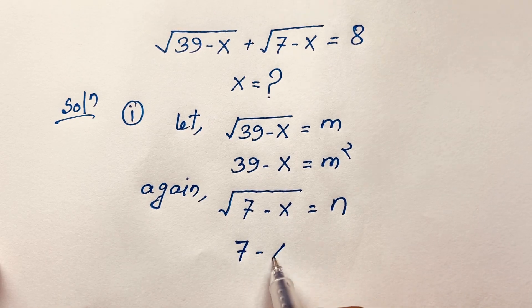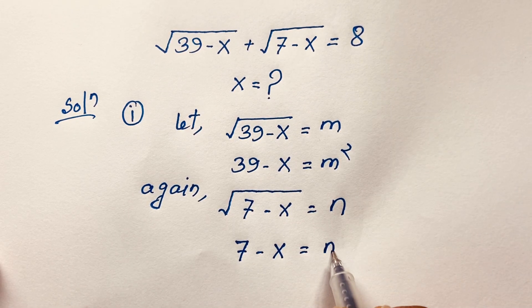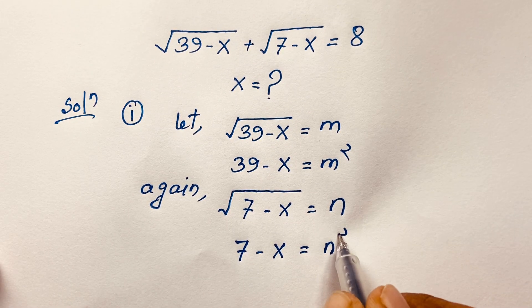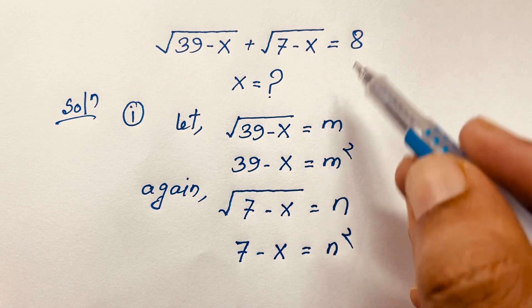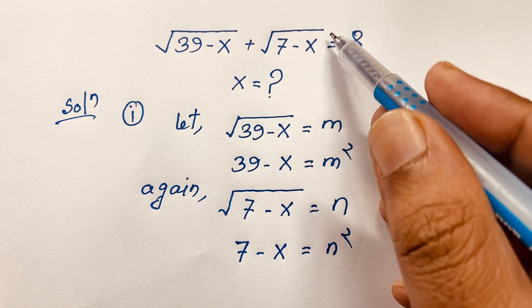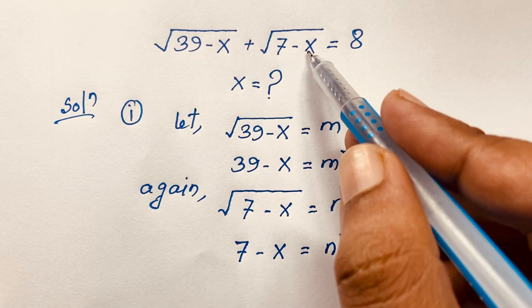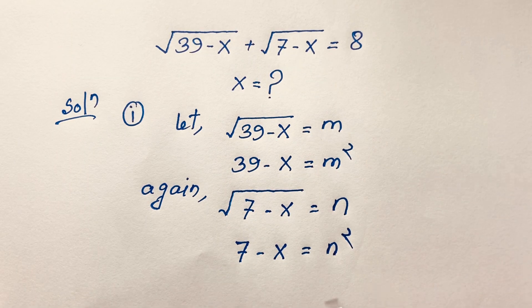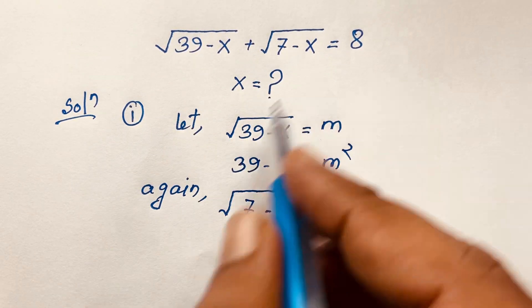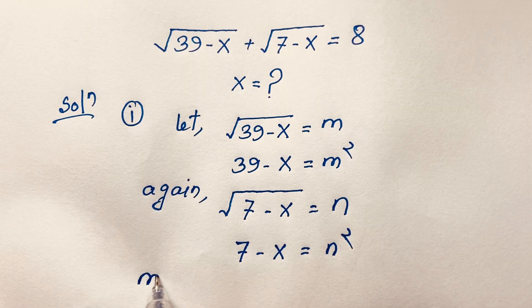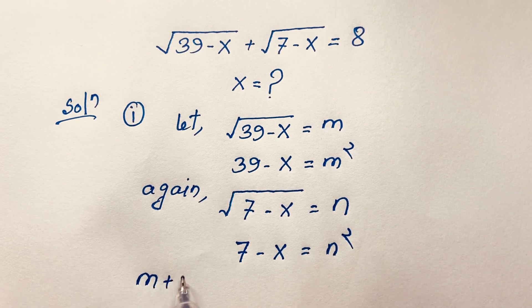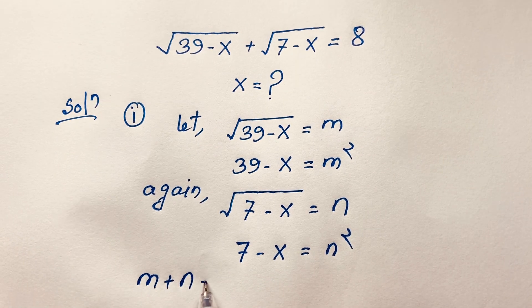Squaring both sides gives us 7 minus x equals n squared. Now substituting into the original expression, we have m plus n is equal to 8.